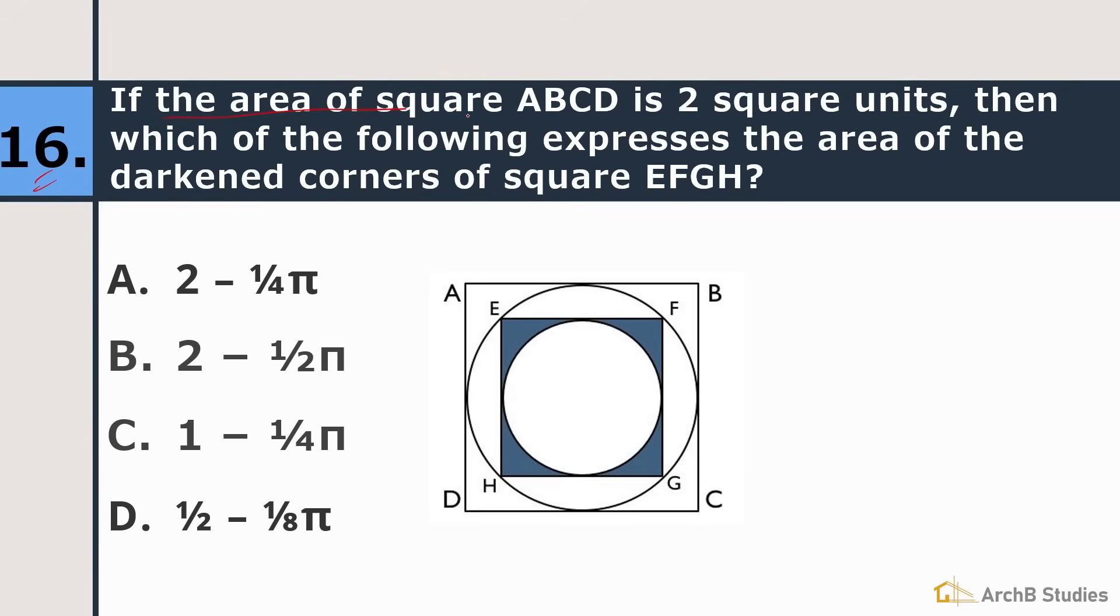Sixteenth is if the area of square ABCD is two square units, then which of the following expresses the area of the darkened corners of square EFGH? We know the area of ABCD, that is two square units. Now we need to find out the area of this portion. The question is how do we do it? The center of this circle and this circle will lie over here. If we can find out the area of EFGH and subtract the area of this circle, we can get the area of this darkened part. So to find out the area of EFGH square, we need to know the side of EFGH.